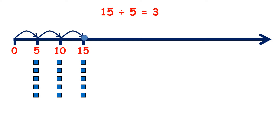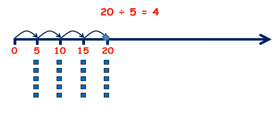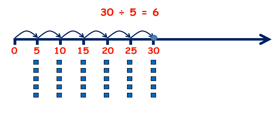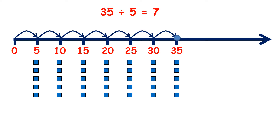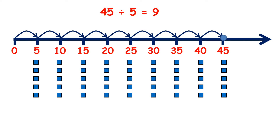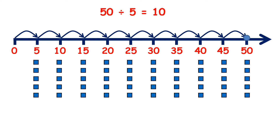15 divided by 5 is 3. If we have 15, we can make 3 groups of 5. 20 divided by 5 is 4. 25 divided by 5 is 5. 30 divided by 5 is 6. 35 divided by 5 is 7. 40 divided by 5 is 8. 45 divided by 5 is 9. And 50 divided by 5 is 10. So if we have 50, we can make 10 groups of 5.